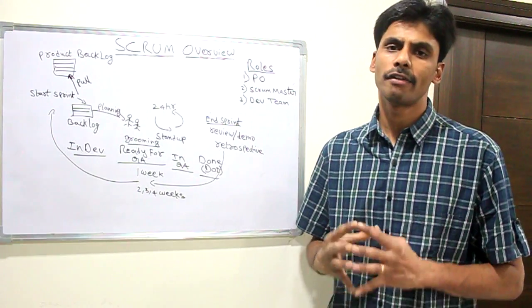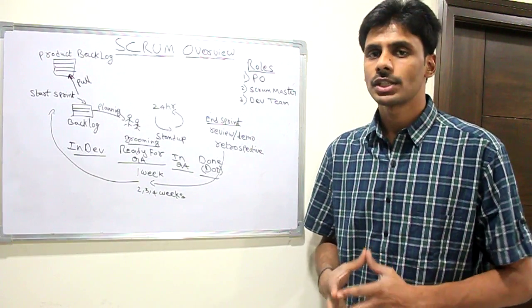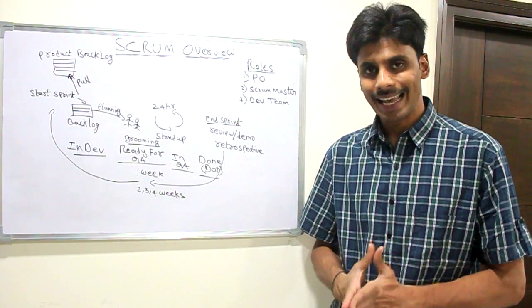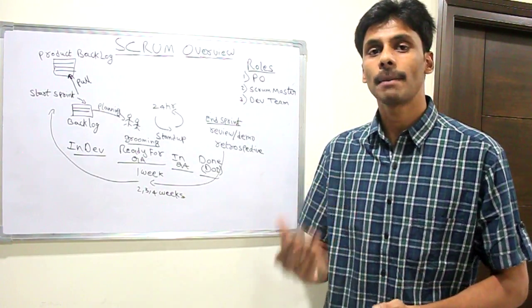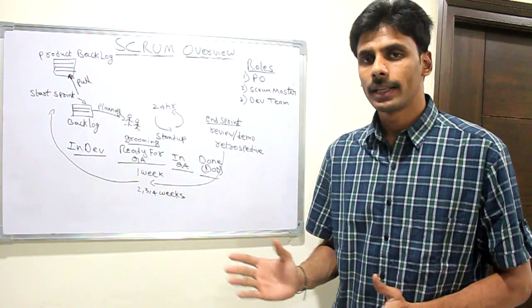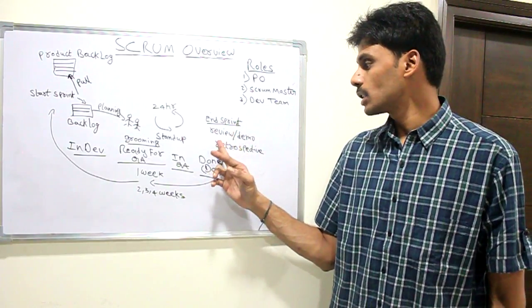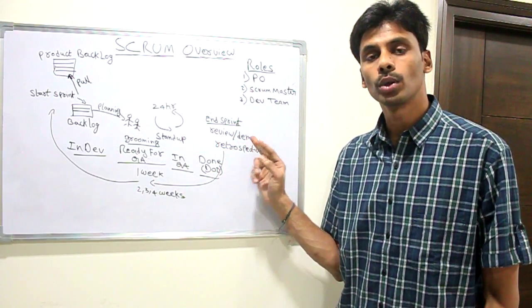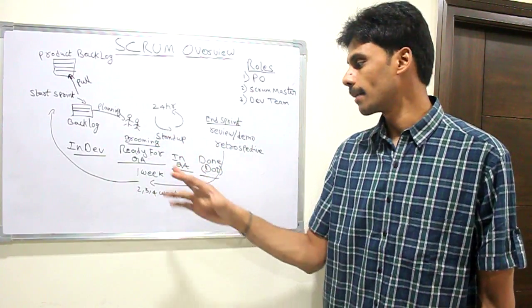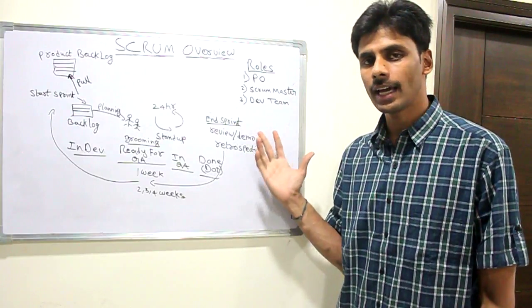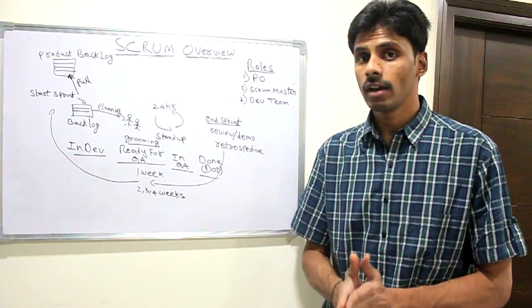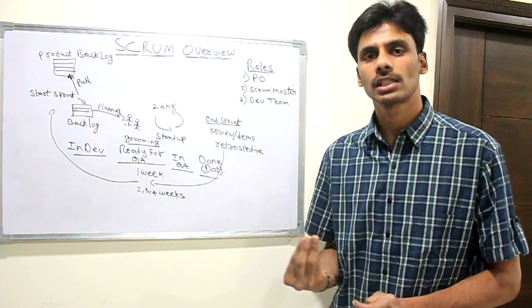Once we start the sprint, every day we meet for a standup wherein every developer, every QA, every tester will give their status of what they have done that day and what they will be doing the next day. If there are any impediments, they bring them up to the team, and the scrum master is responsible for helping the team out to get rid of those impediments and make the flow smoother. At the end of each sprint, we will do a demo to the product owner. Once he or she accepts the stories or the requirements, then only they can be moved to the done phase before we take more stories. In the retrospective meeting, we are going to share what went well, what didn't go well, and any insights for the future.